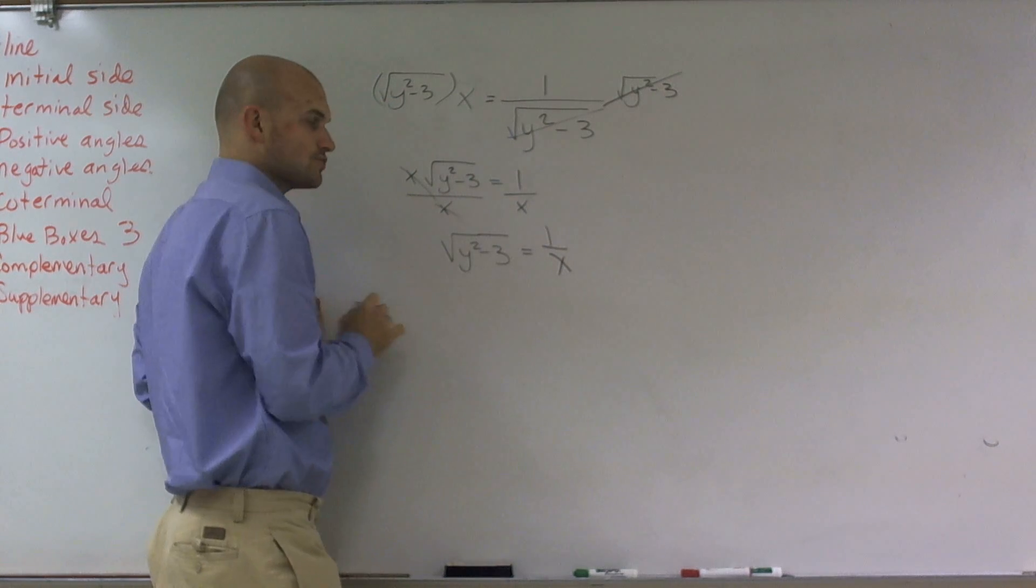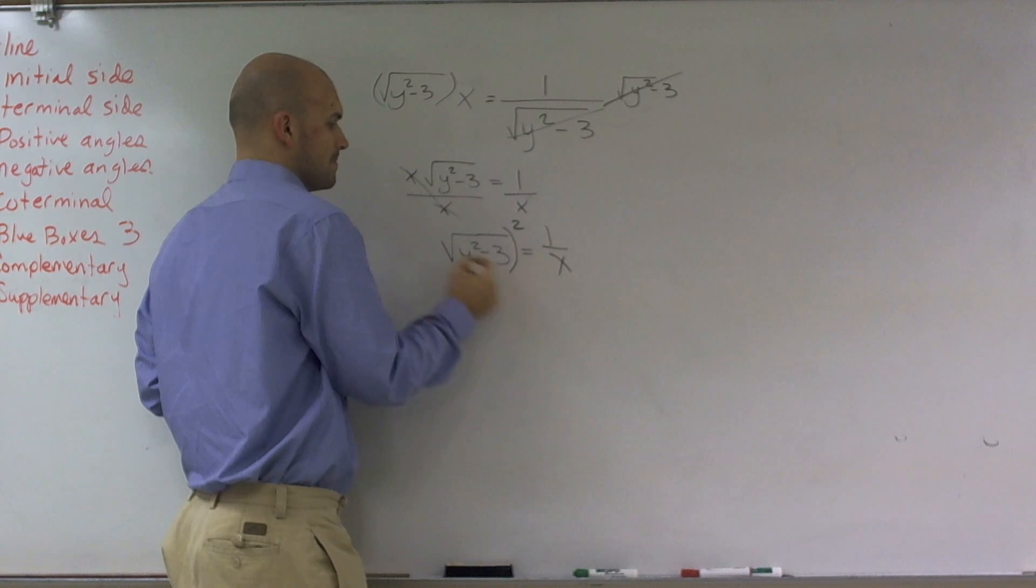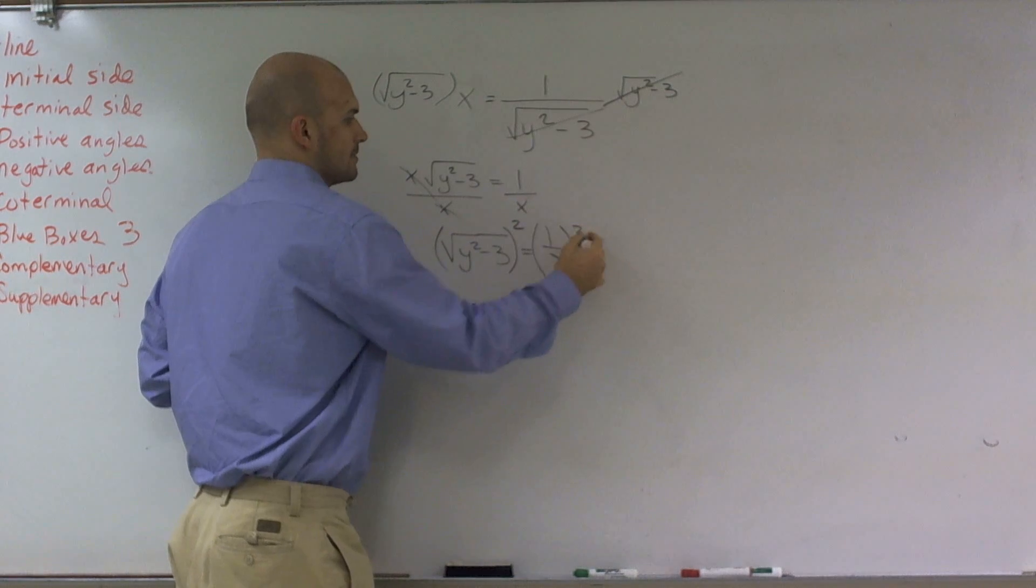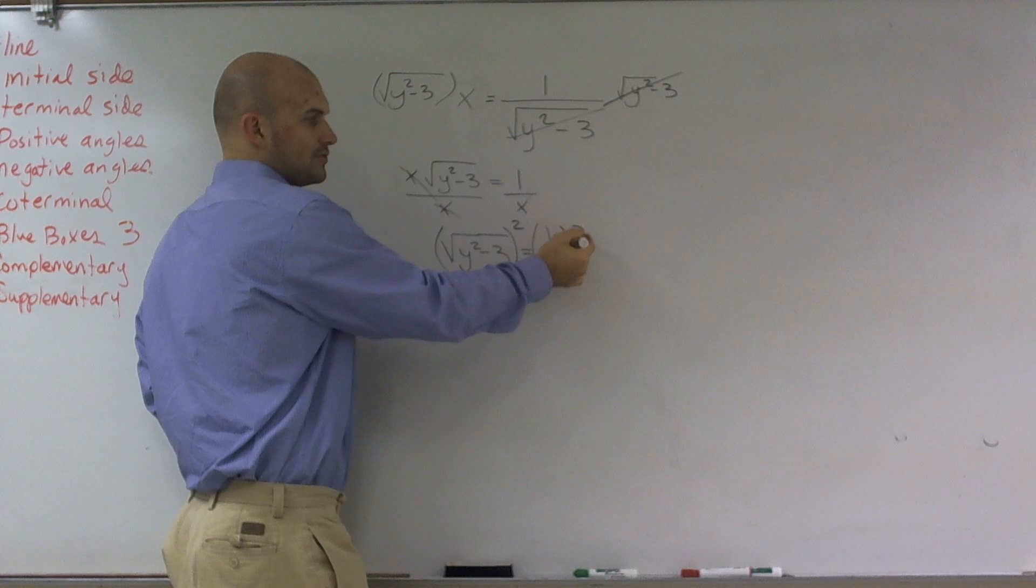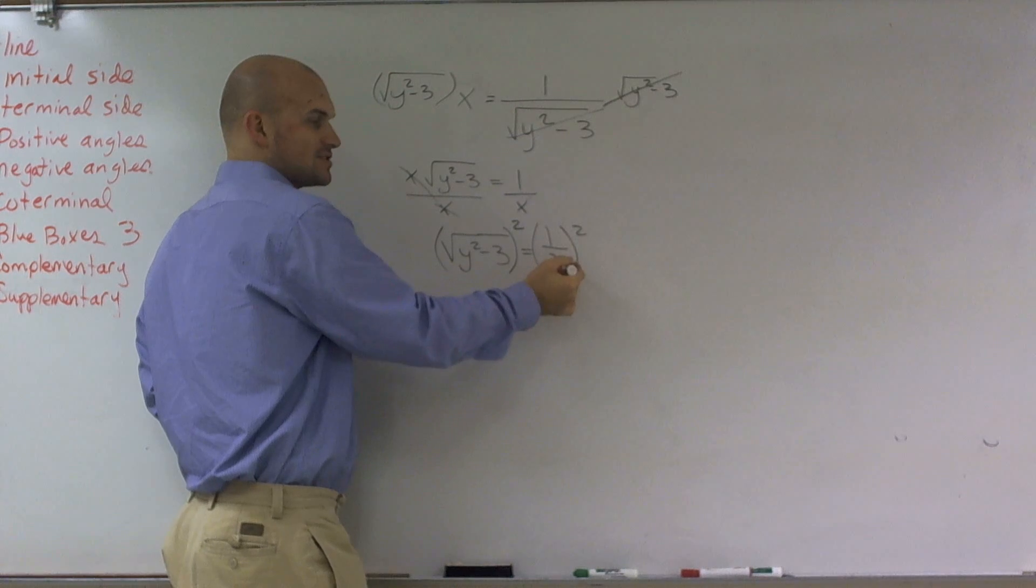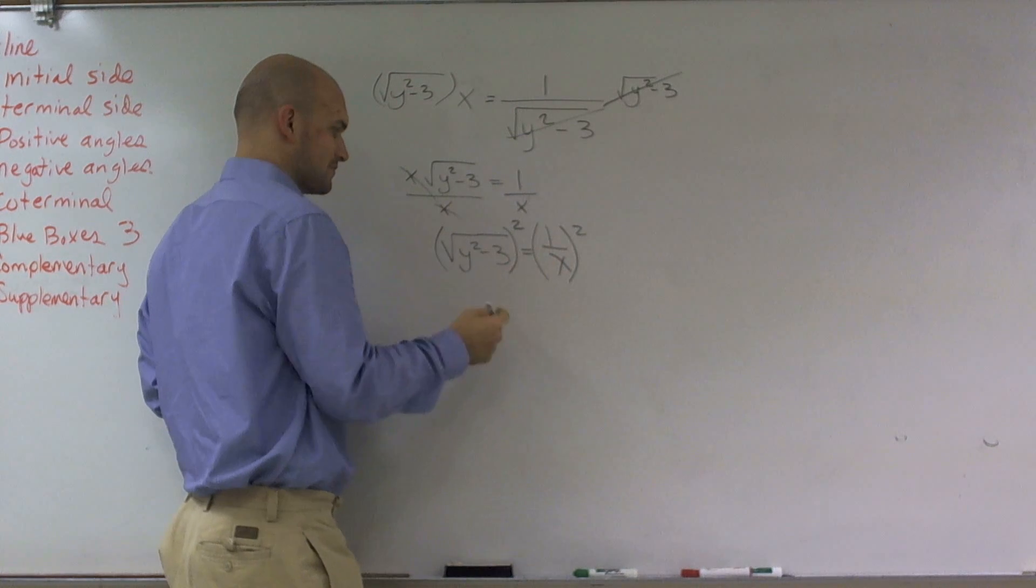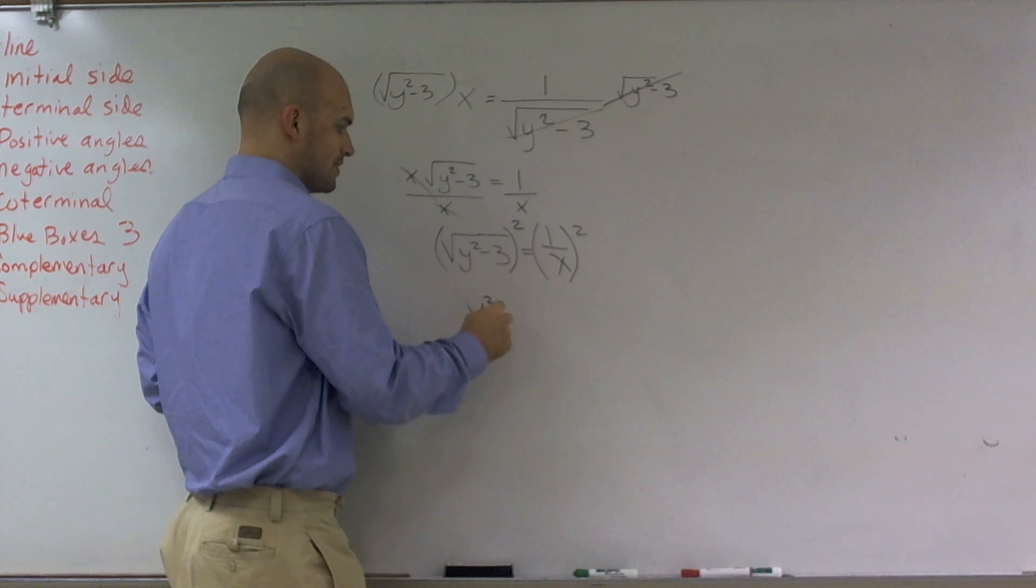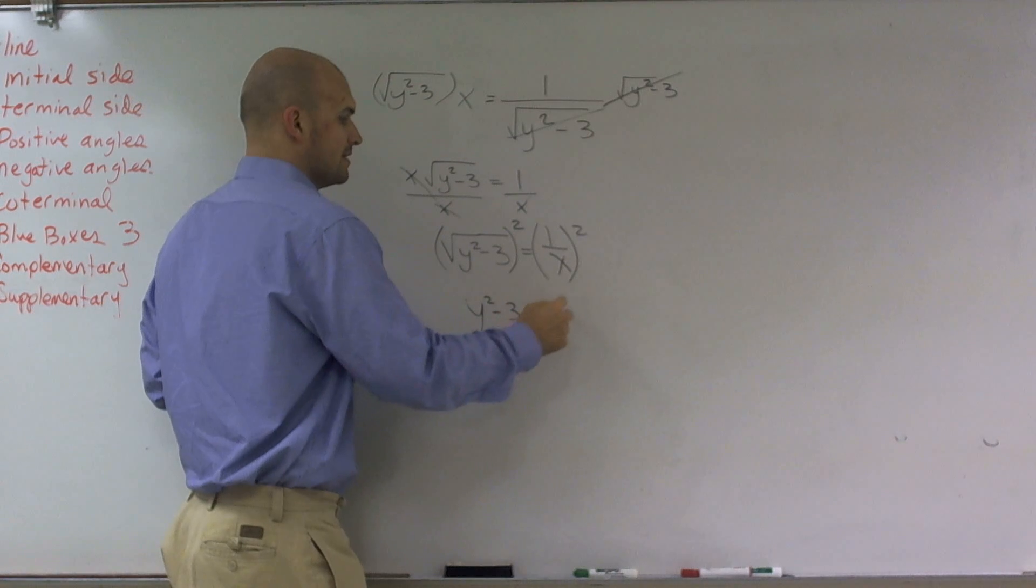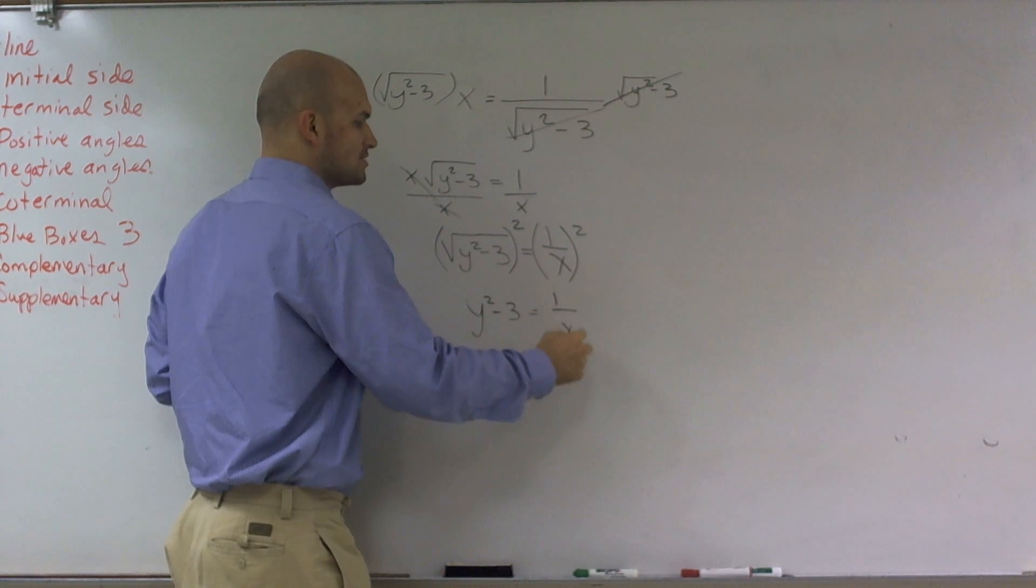Now to undo the square root, I'm going to square the left side and the right side. Remember, this goes to 1² over x². Well, 1² is 1, so I'm left with x². So I have y² minus 3 equals 1/x².